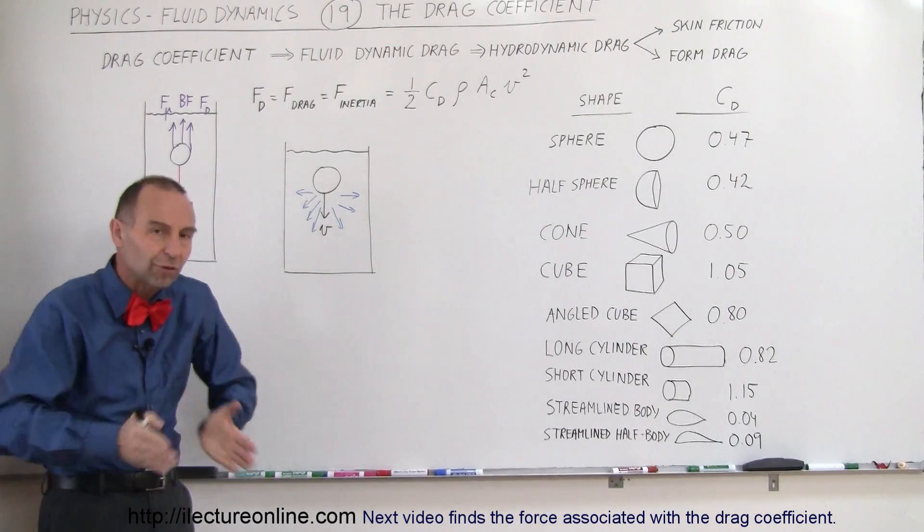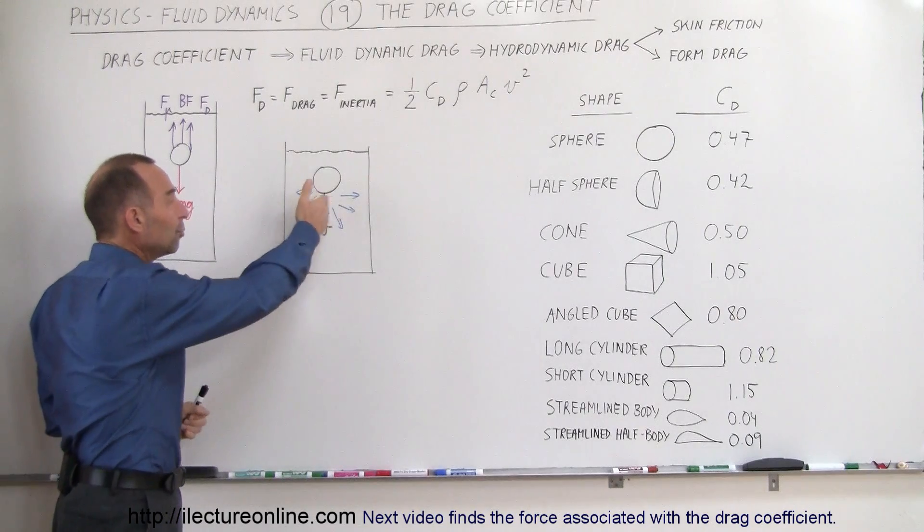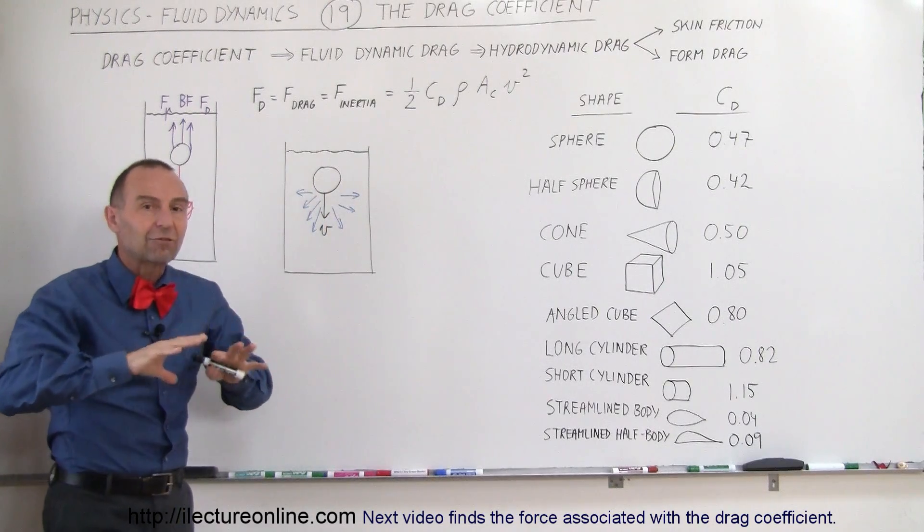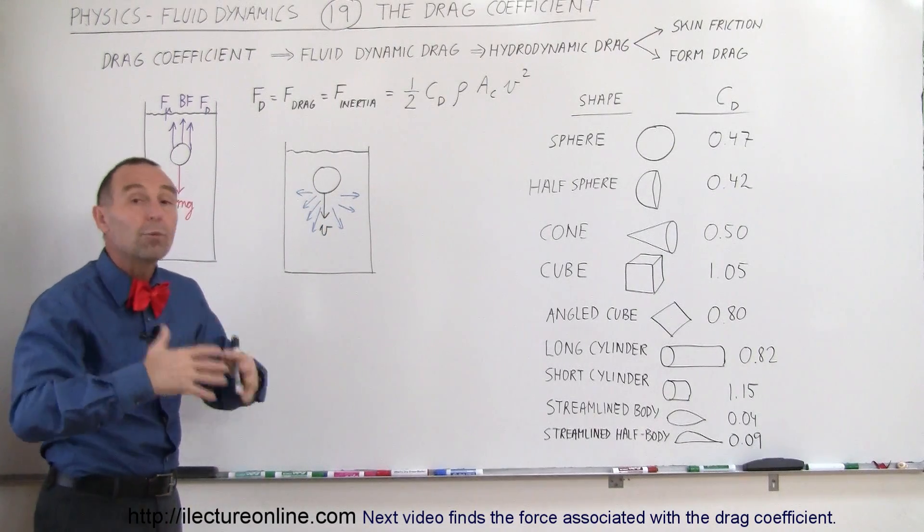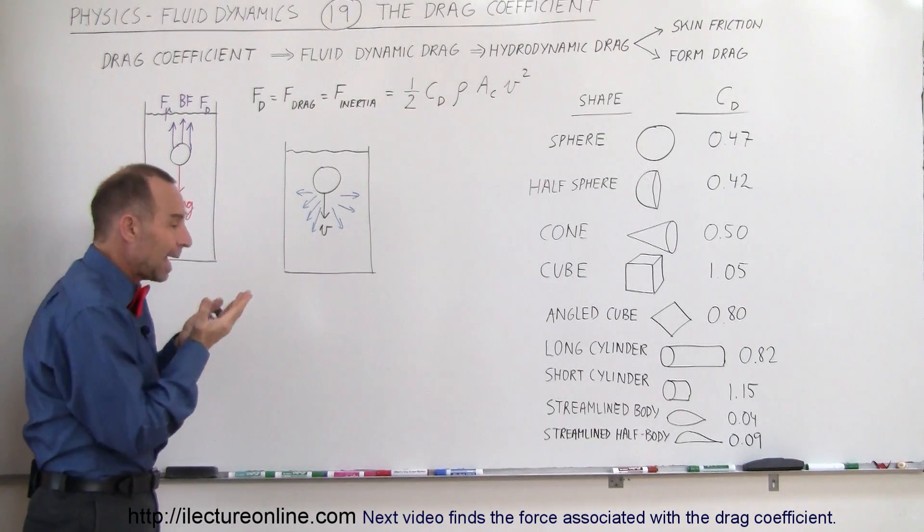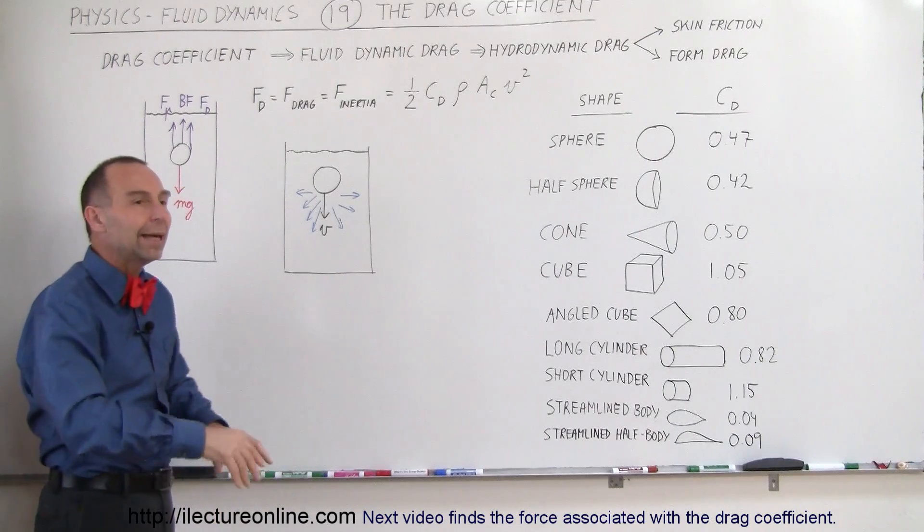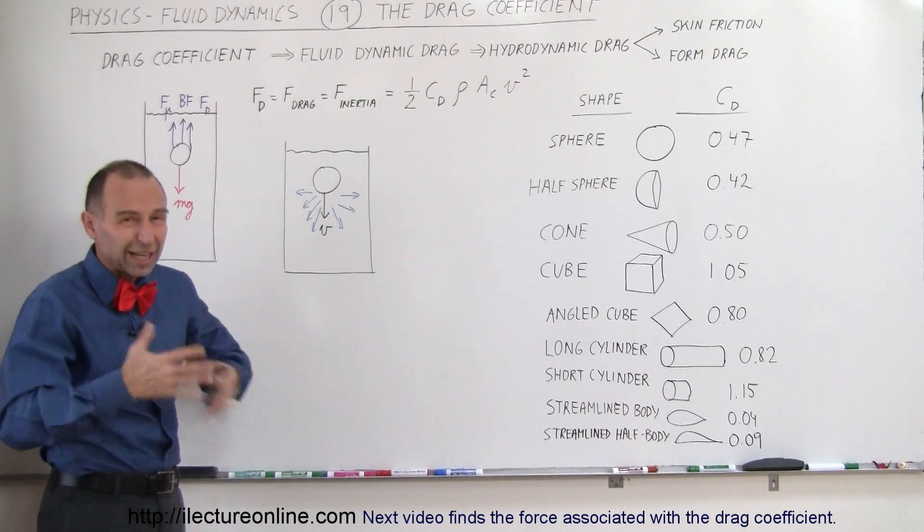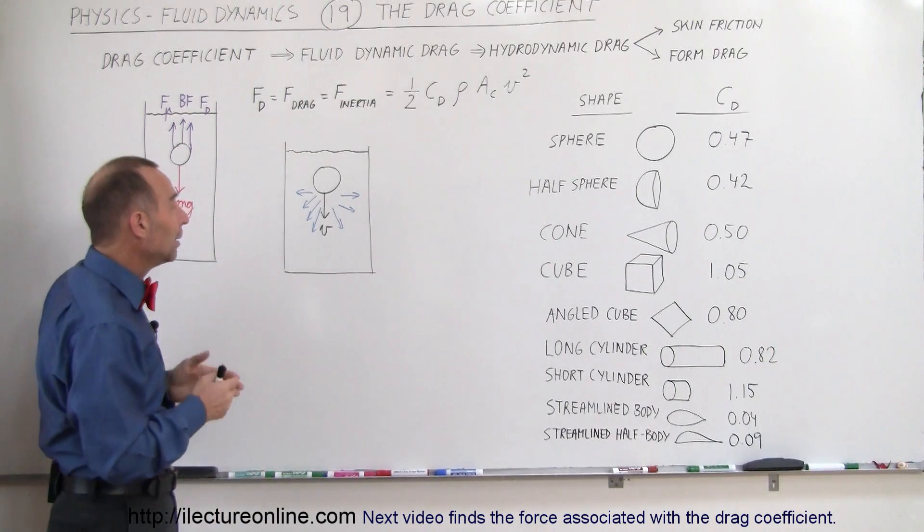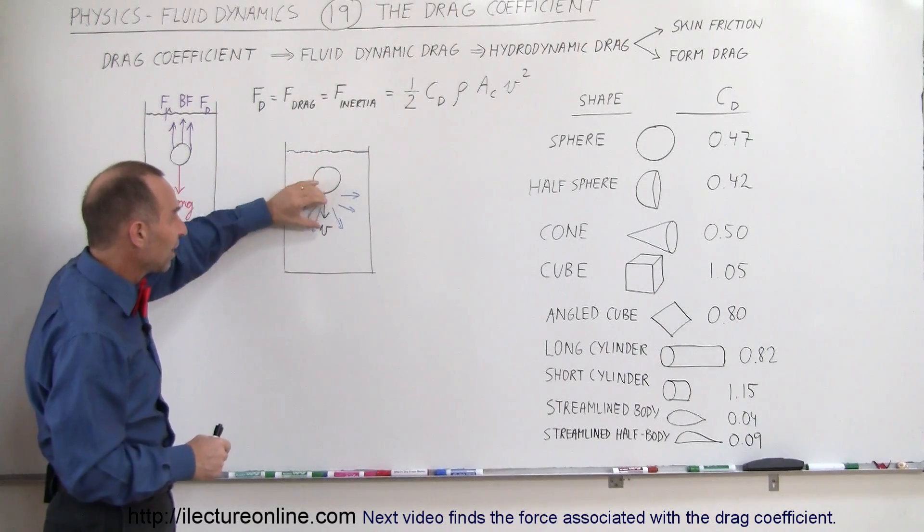But again, it's how easily the object can move the fluid out of the way. Not only do they have to move it out of the way, you have to give that fluid inertia or a moment of inertia so to speak. It has to give the fluid some velocity, some movement out of the way and all that requires a force. So you're kind of pushing things out of the way and moving it so that the object can slice through the fluid.